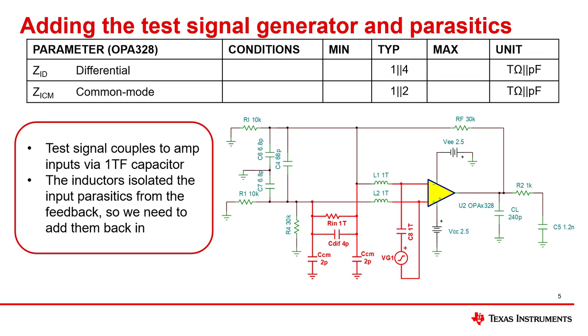The next step is to connect the test signal source. This source is connected via a 1 teraFarad capacitor so that the DC bias point is not affected by the test source. The signal connection is shown in red.